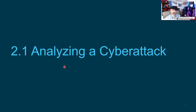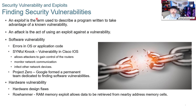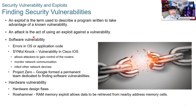First up, analyzing a cyberattack. Finding security vulnerabilities is one of the attack vectors that actors or people try to attack an organization. An exploit is the term used to describe a program written to take advantage of a known vulnerability — something in a system, maybe a software program or hardware. An attack is the act of using that exploit against the vulnerability.